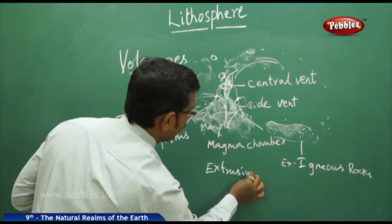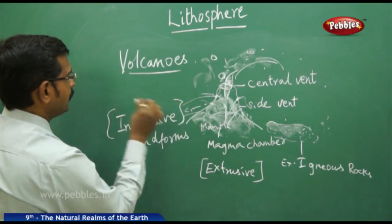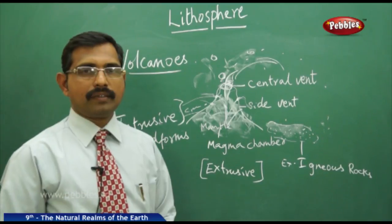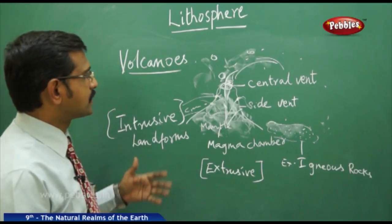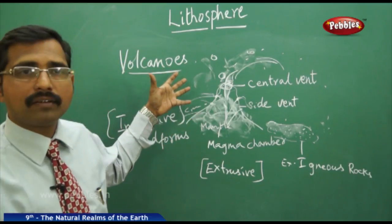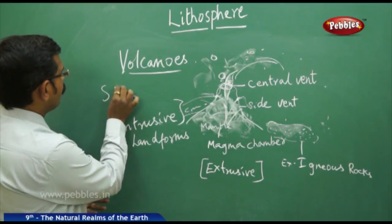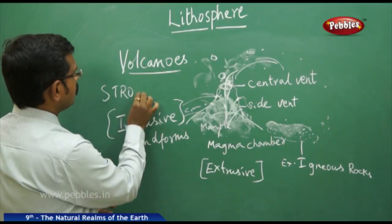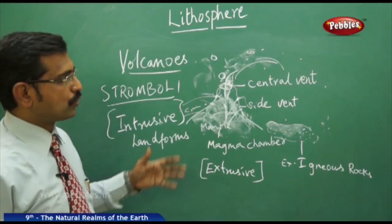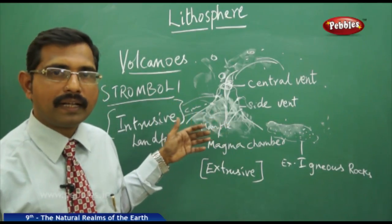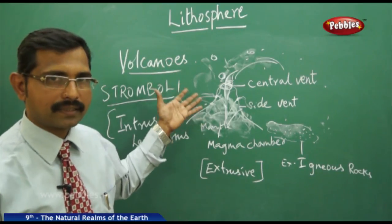So we have two categories: extrusive landforms and intrusive landforms. The best example of an active volcano you can see today is the Stromboli Volcano, located in the Mediterranean Sea. It is very active even now — you can observe it forming all these ashes and volcanic features, though it is a very hot place to approach.